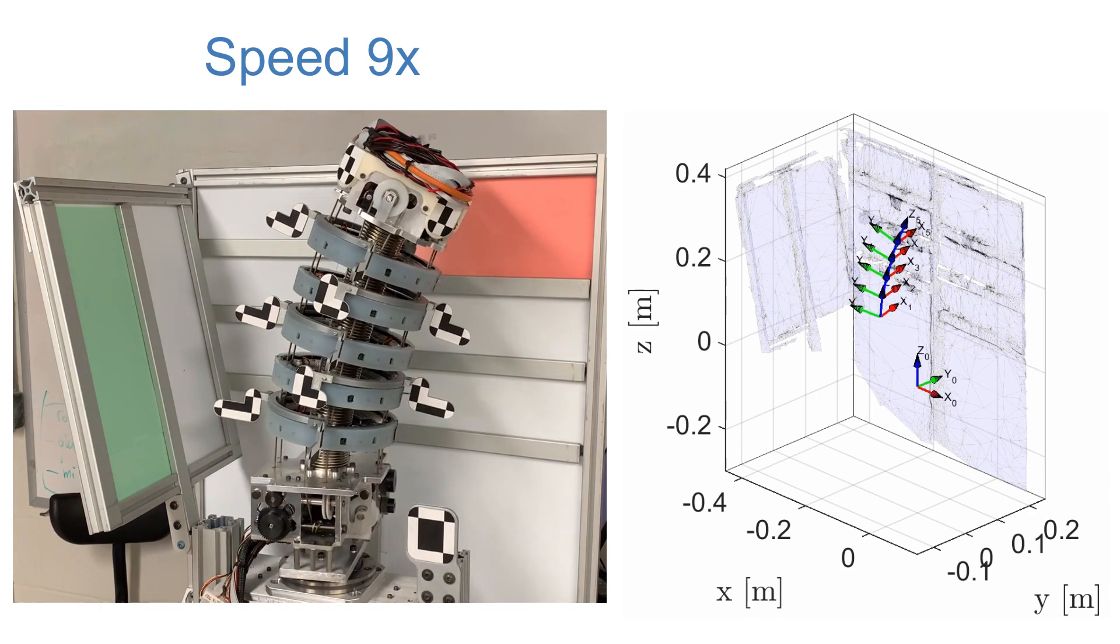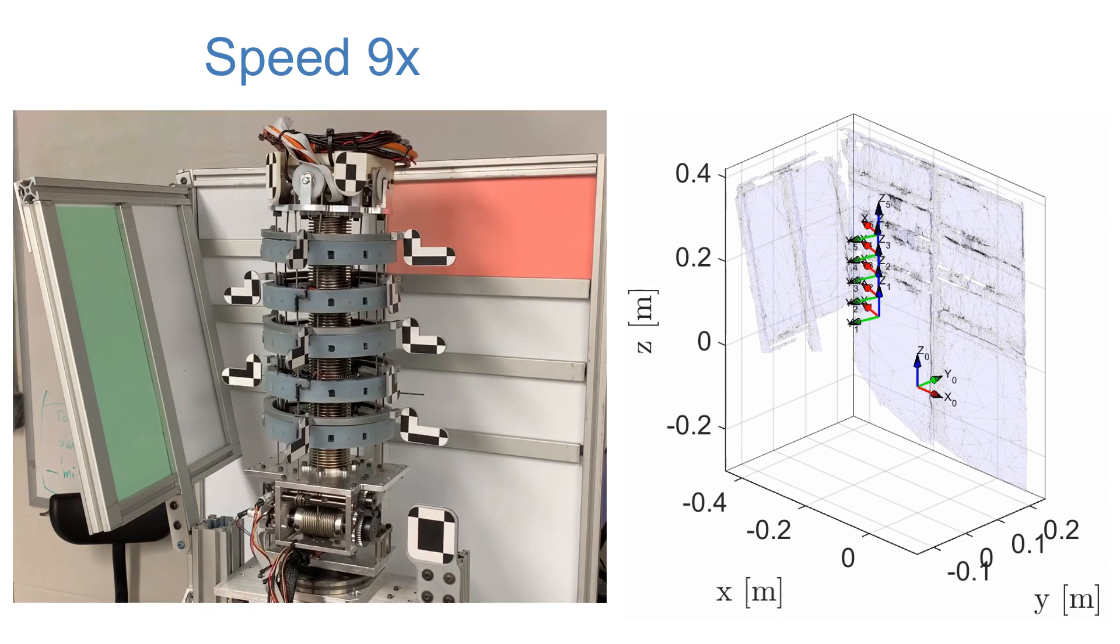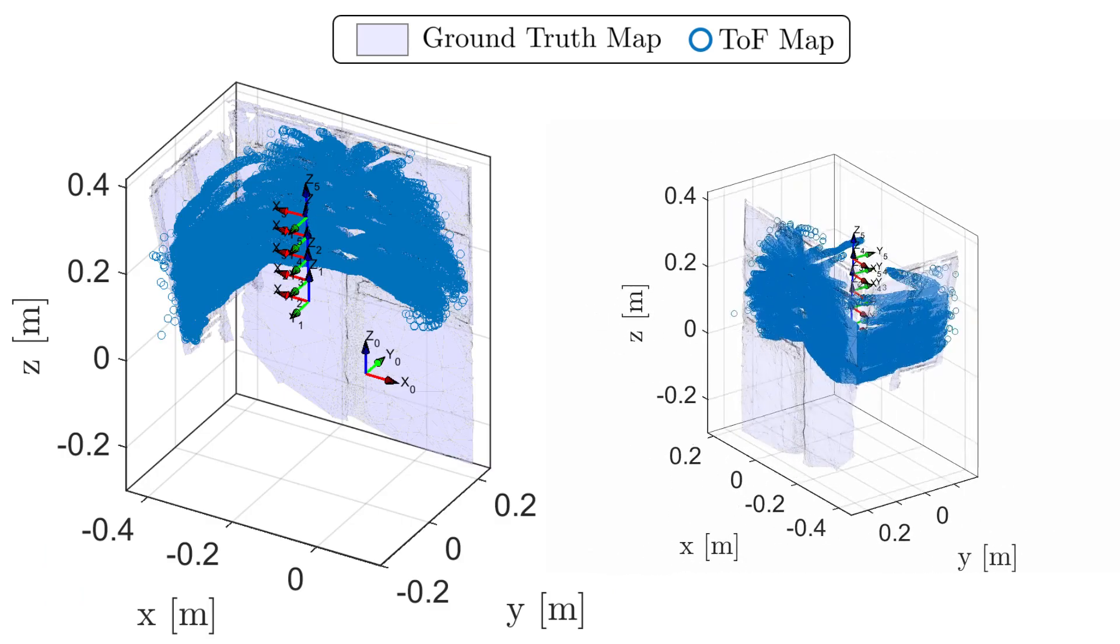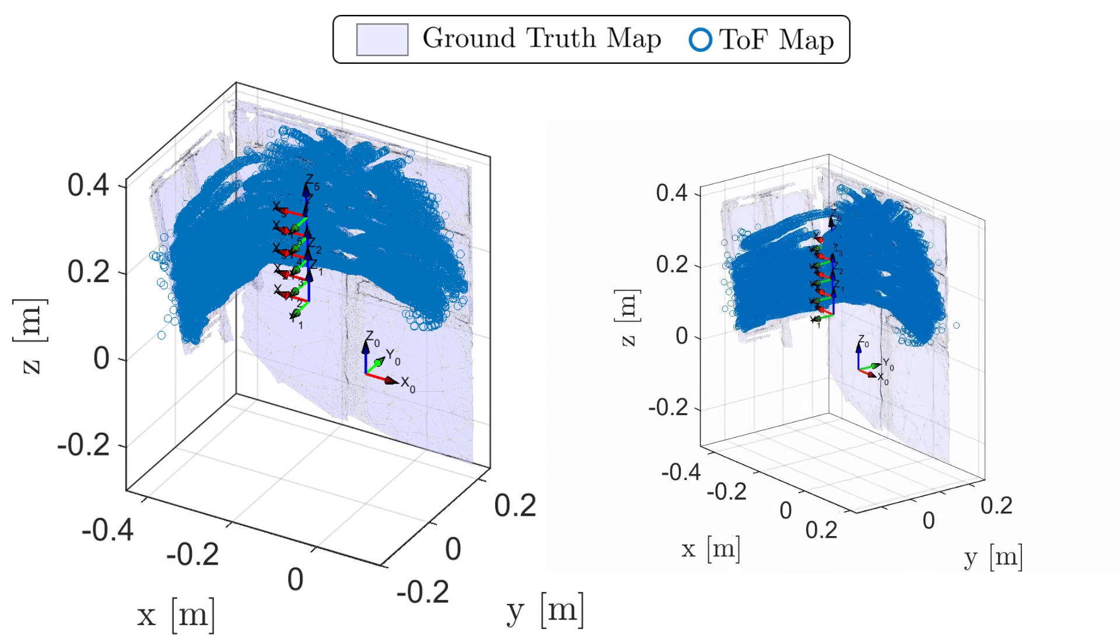During the robot motion, the distributed time-of-flight sensors record proximity data, and this proximity data results in an experimental map of the environment.